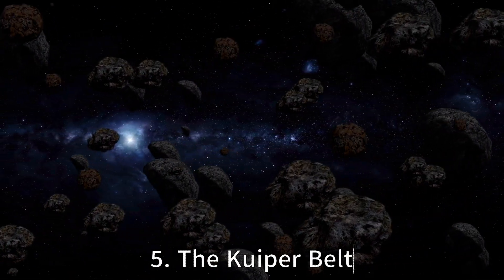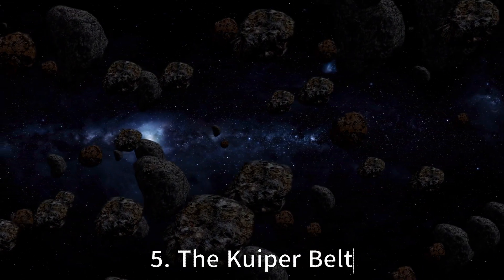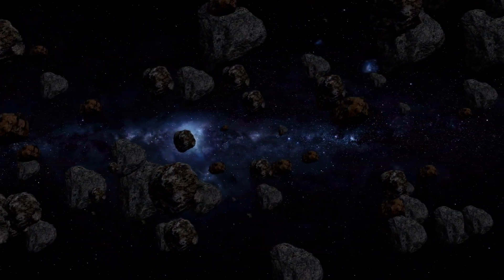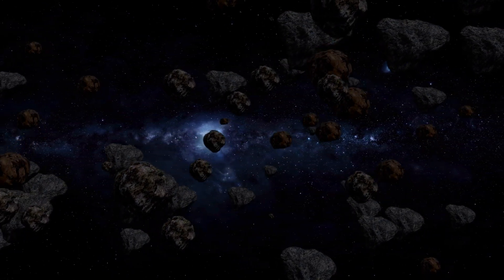The Kuiper belt is a region of the solar system that contains many small icy bodies including dwarf planets like Pluto. It is believed to be the source of many comets that pass through our solar system.